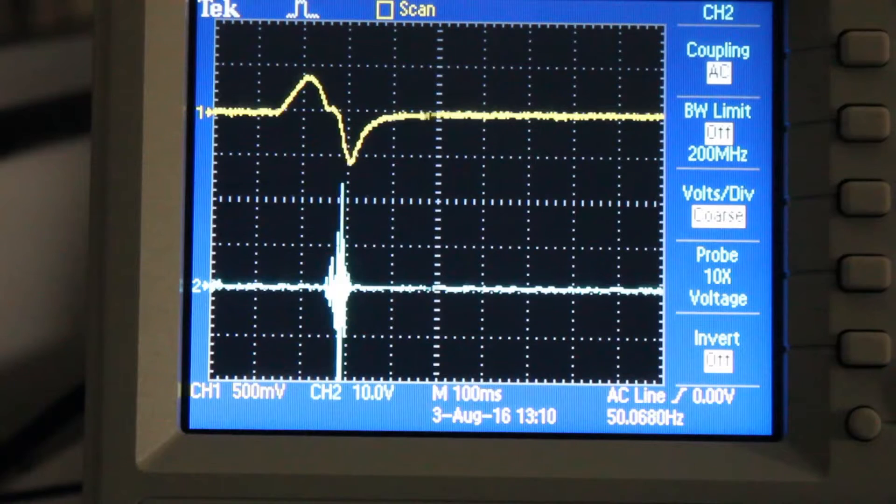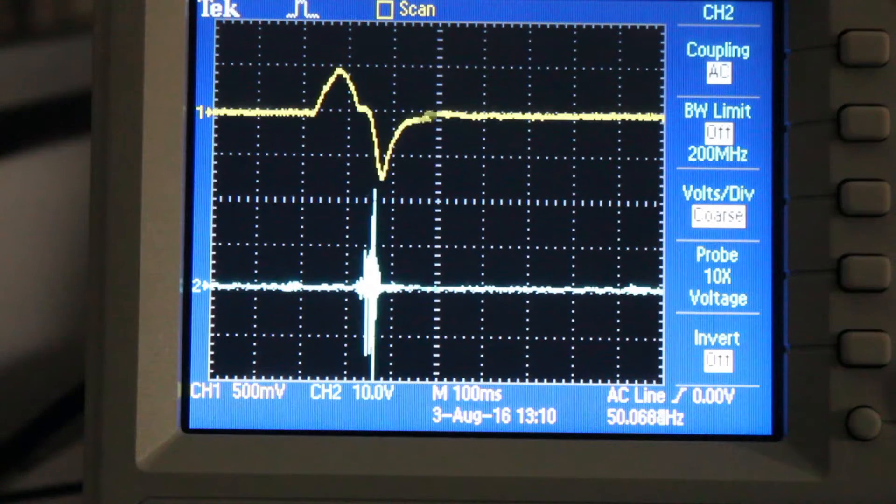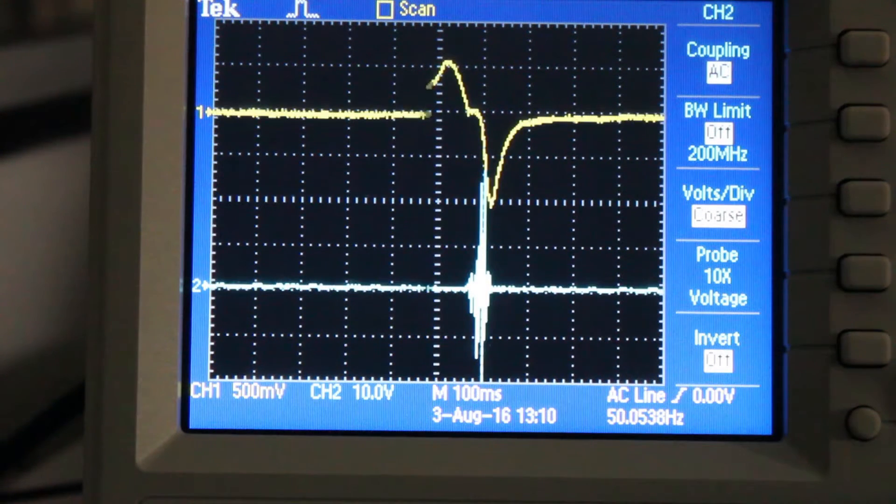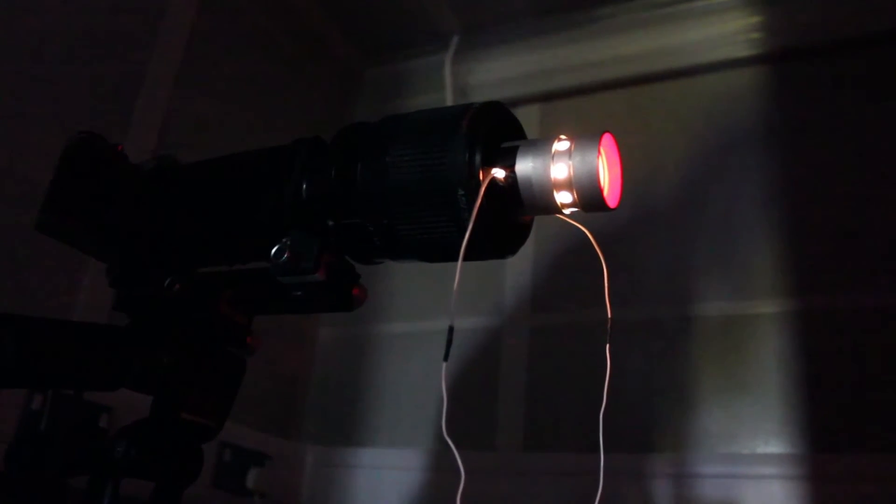The machine detects the motion of structures as changes in voltage. These changes in voltage can be translated into displacement, and based on that we can study the velocity of the structure we are measuring.